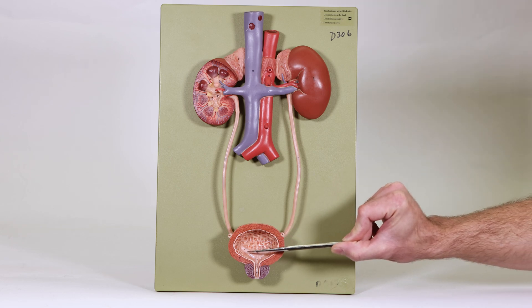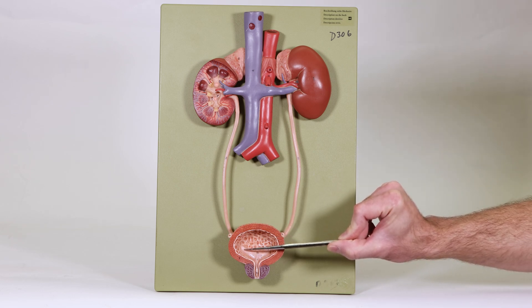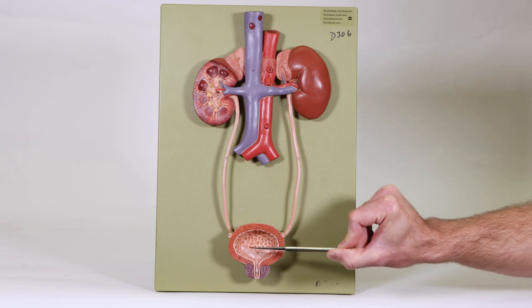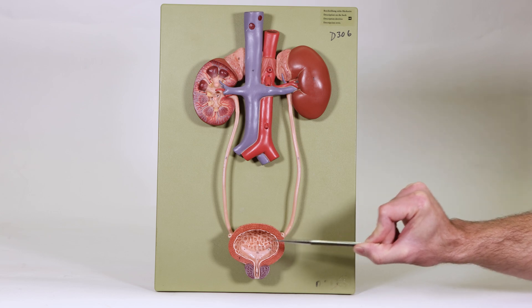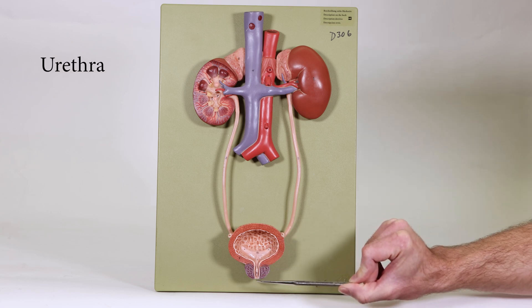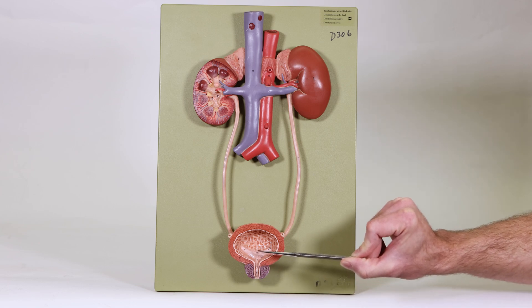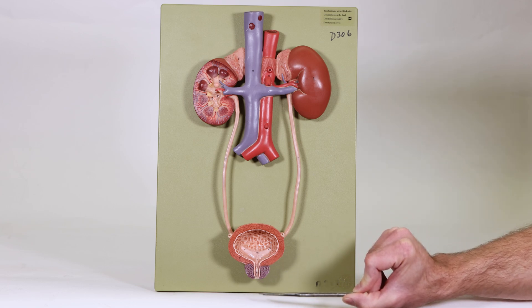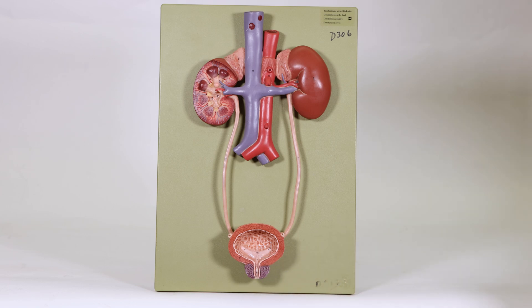You can see the openings from the ureters coming into the urinary bladder. Then we have the urethra starting to lead down at this point — this is going to be where the urethra starts and keeps running out after that.